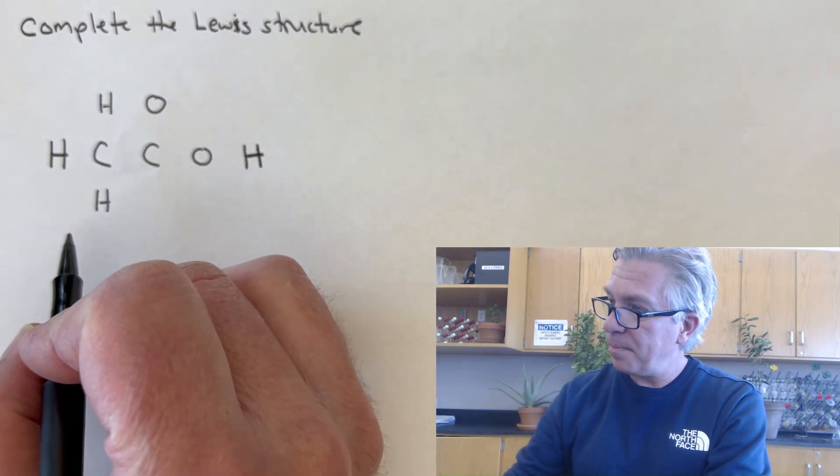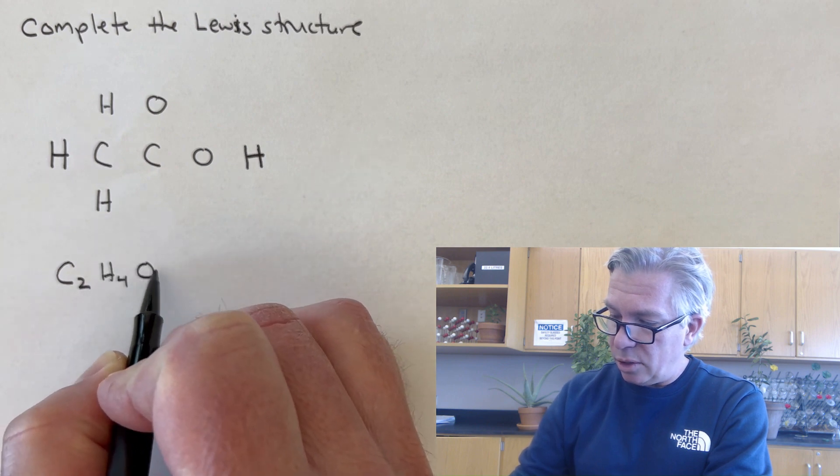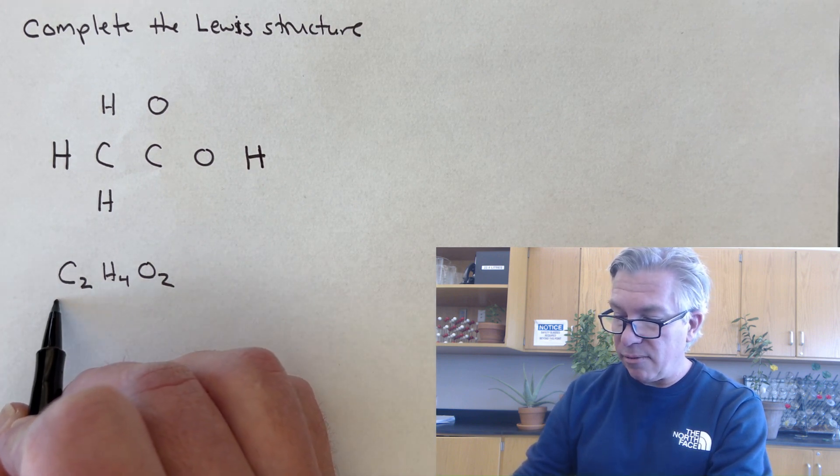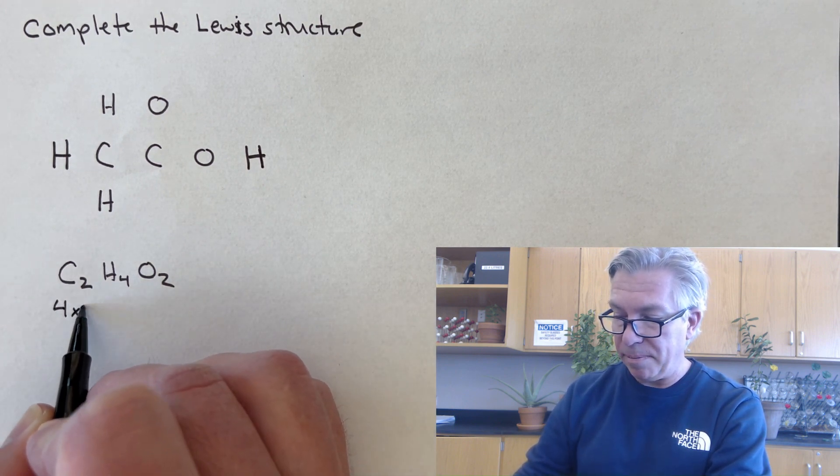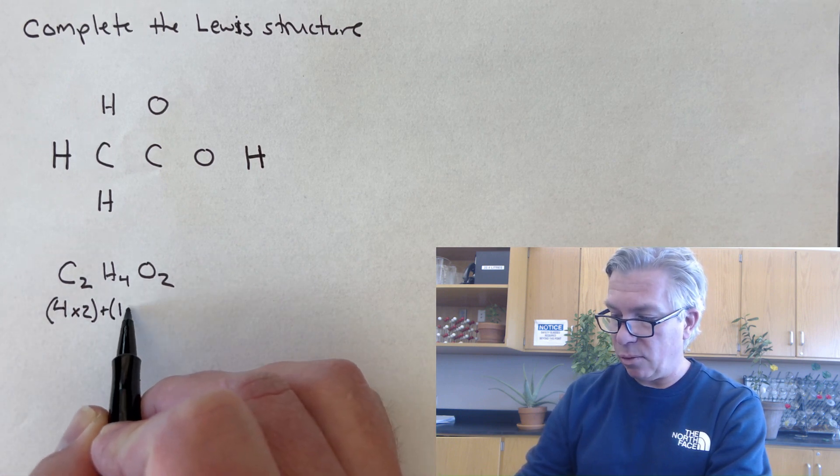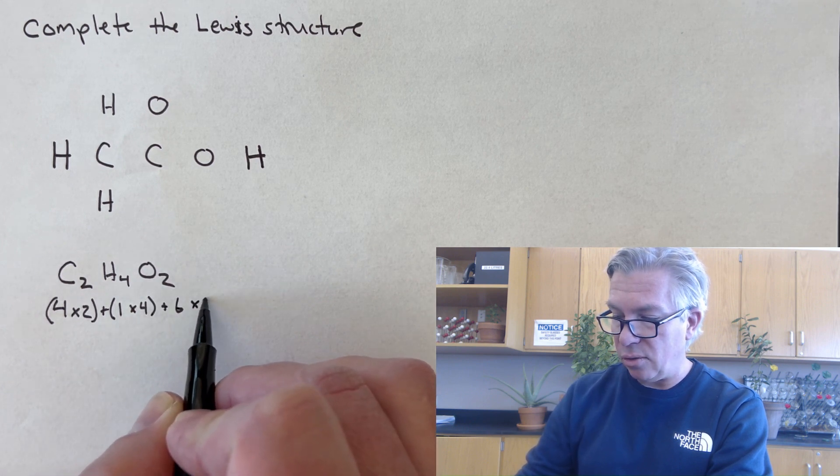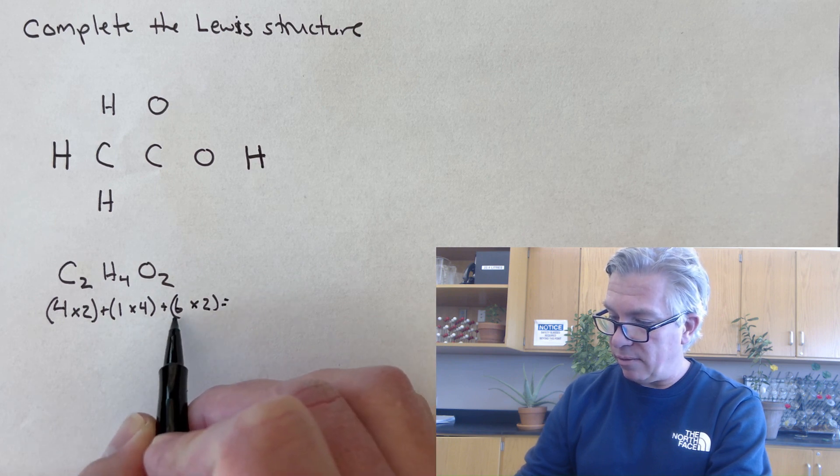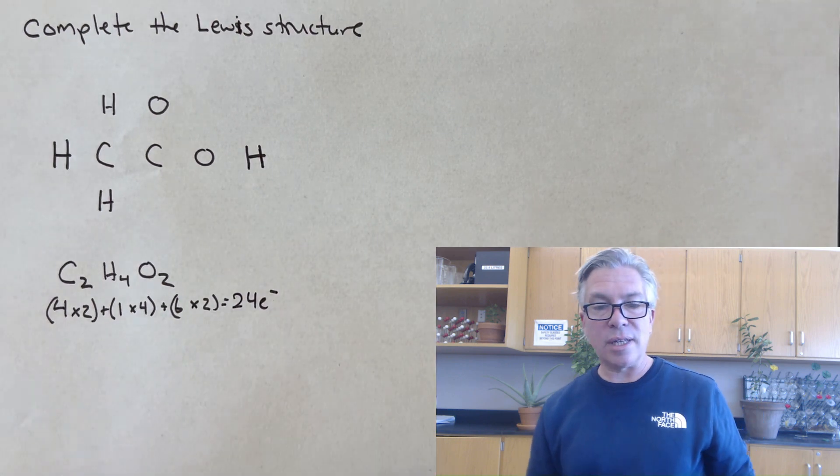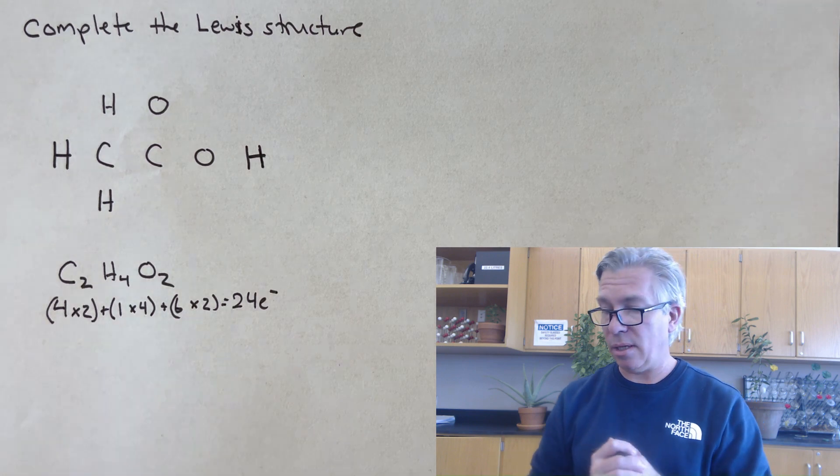So let's do that. C2H4O2 would be the condensed formula. Each carbon has four valence electrons and there's two of them. Each hydrogen has one valence electron and there's four of them. And each oxygen has six valence electrons and there's two of those. So that makes a total of 24 electrons. I need 24 electrons in this structure, whether they're lines representing bonds or extra dots representing lone pairs.